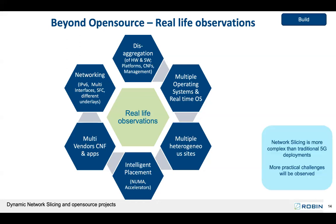Considering all these challenges, network slicing is more complex than it looks, and more complex than what we have done as part of 5G deployment. It has to be dynamic and you will need a metrics and policy engine to achieve actual dynamism. The automation is a really, really important piece of this whole ecosystem — also due to the fact that the scale of 5G deployment is huge, with thousands of clusters, and even a single cluster might have hundreds of nodes.